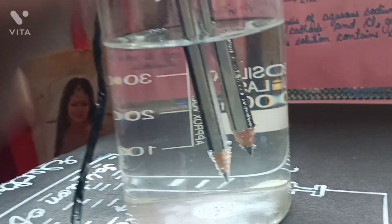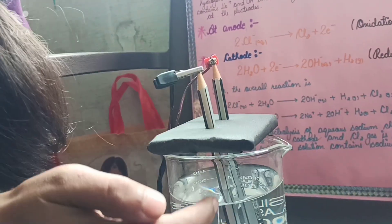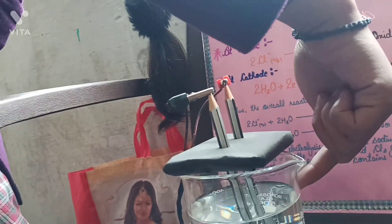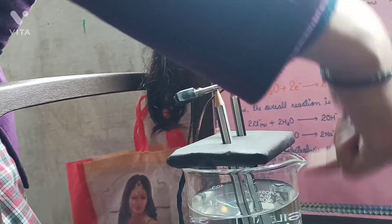As you can see here, this one is behaving as a cathode, where the hydrogen gas is being liberated. And on this side, the chlorine gas will be liberated at the anode. Thank you.